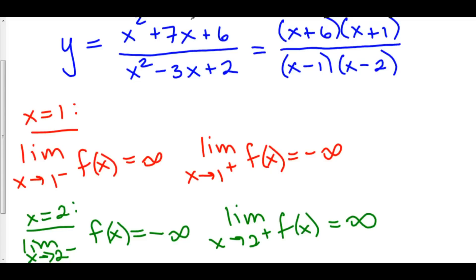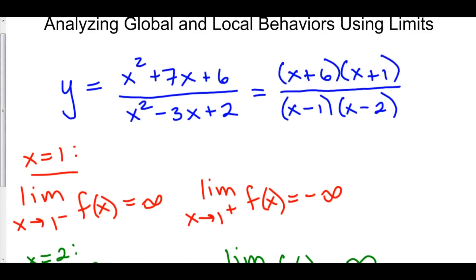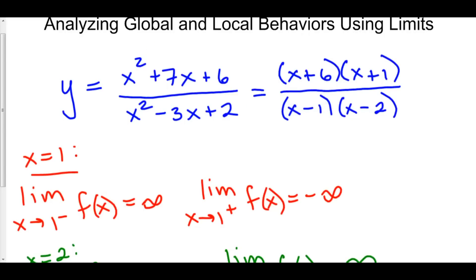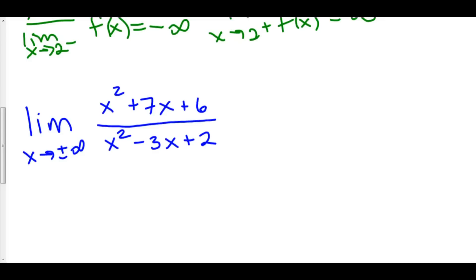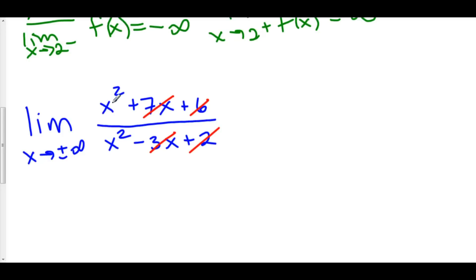Now we can look at the end behavior of our function by looking at our horizontal asymptotes. When we look for our horizontal asymptotes, what we're actually doing is taking the limit as x goes to both positive infinity and negative infinity. To check the end behavior, all we have to do is take the limit as x goes to both positive and negative infinity of our function. Terms like 6, 7x, negative 3x, and 2 are negligible compared to x squared as it blows up, so we can cancel those out. X squared over x squared reduces to 1, and so y equals 1 is our horizontal asymptote.